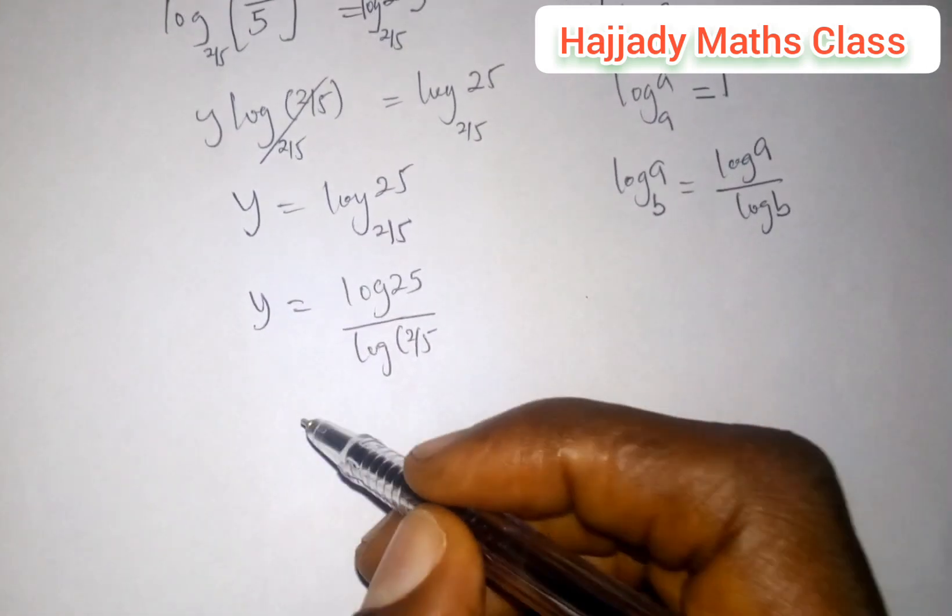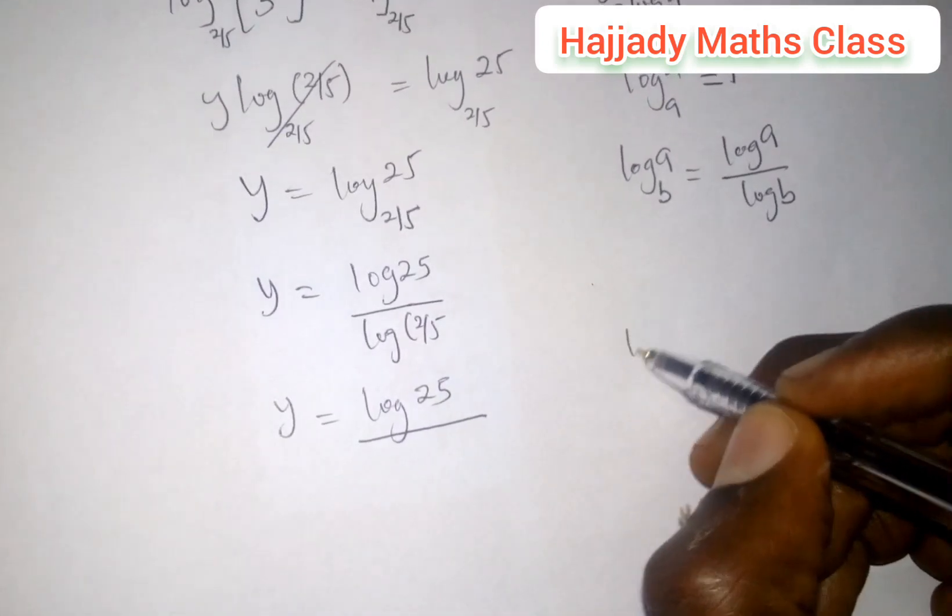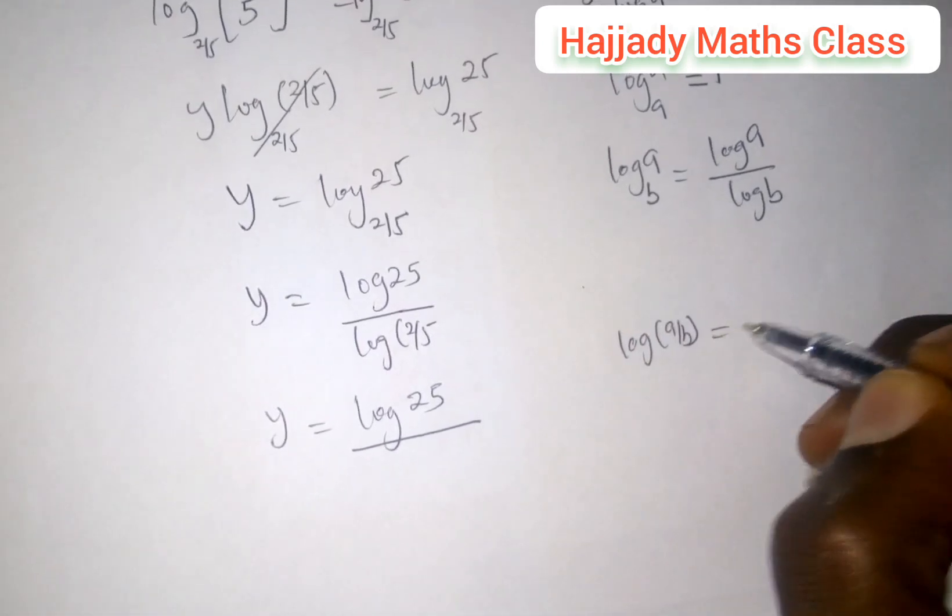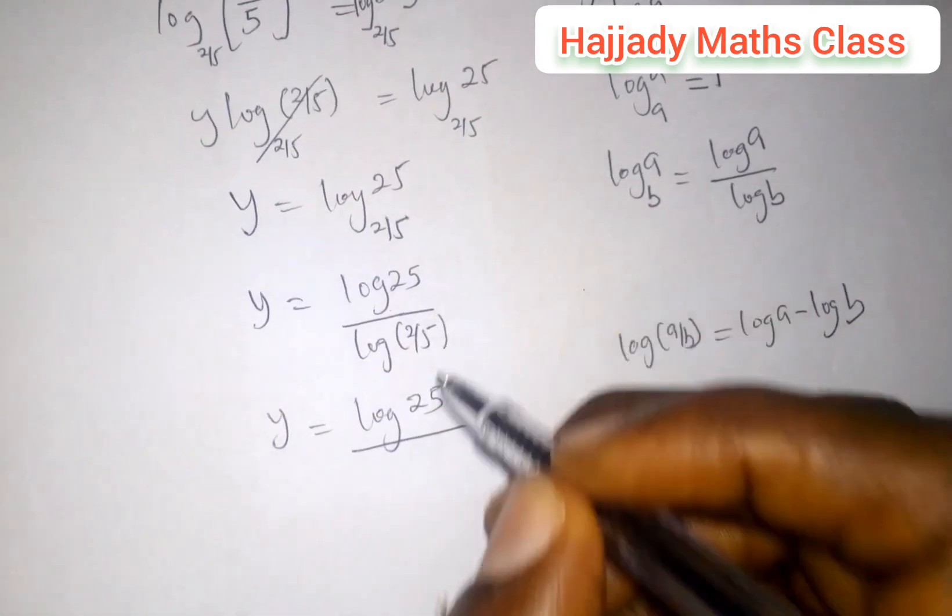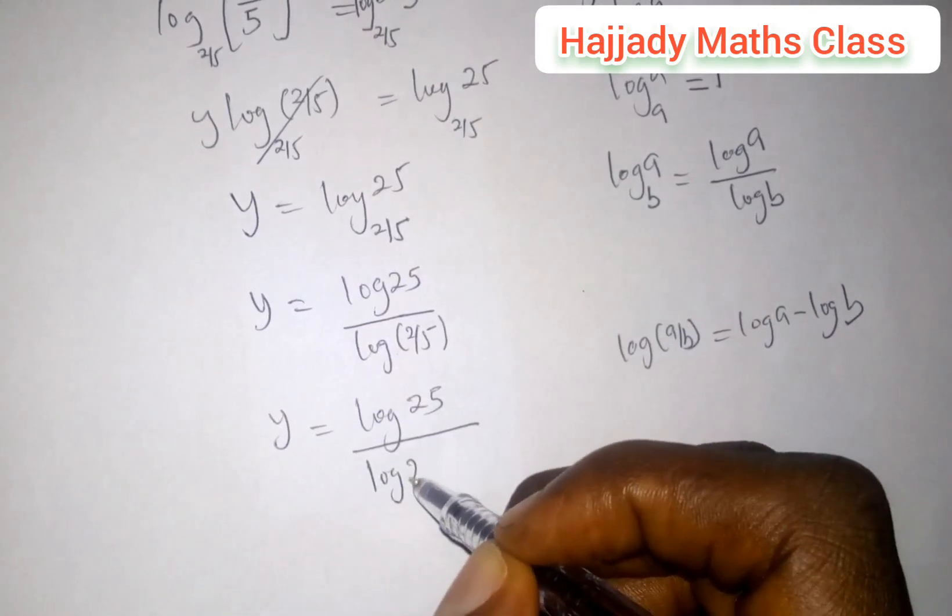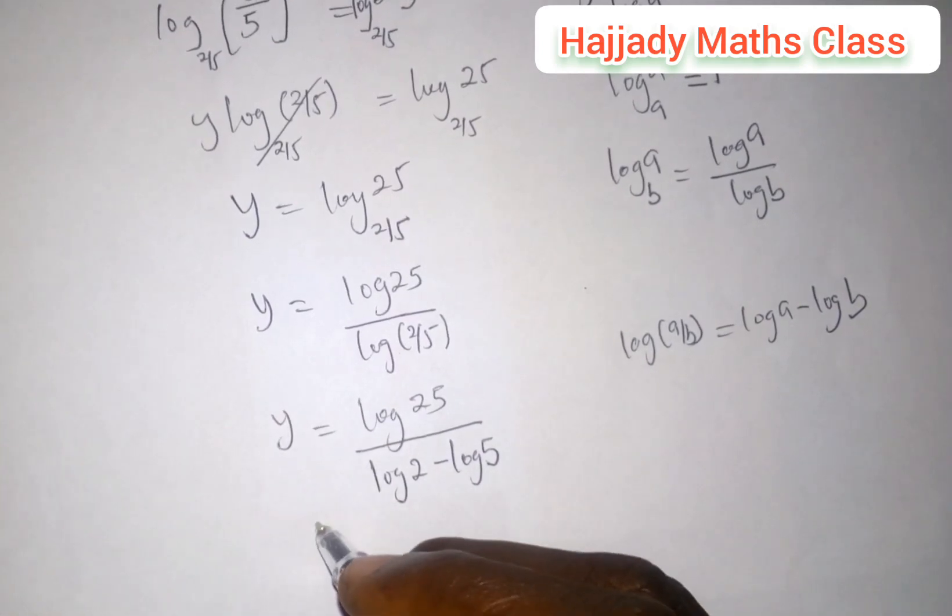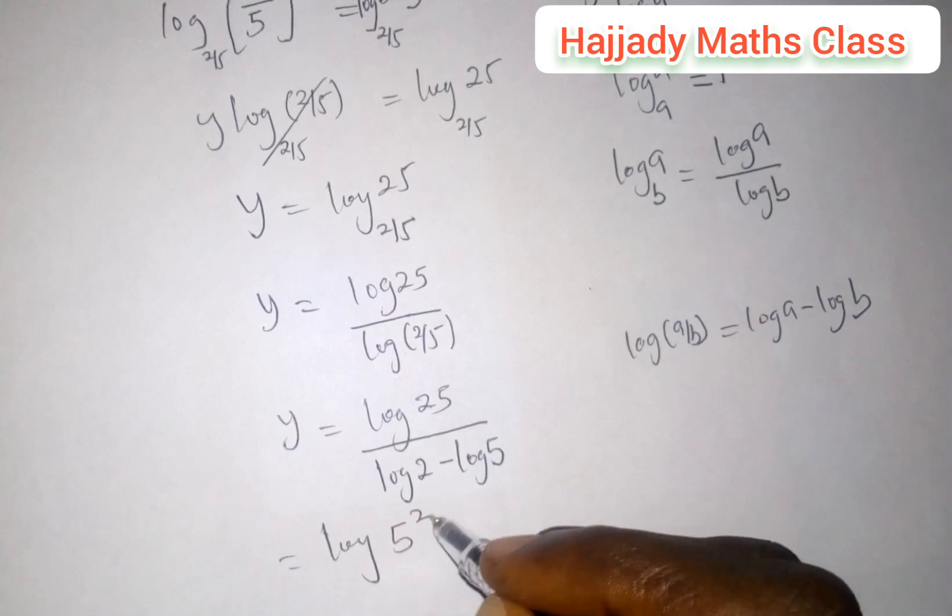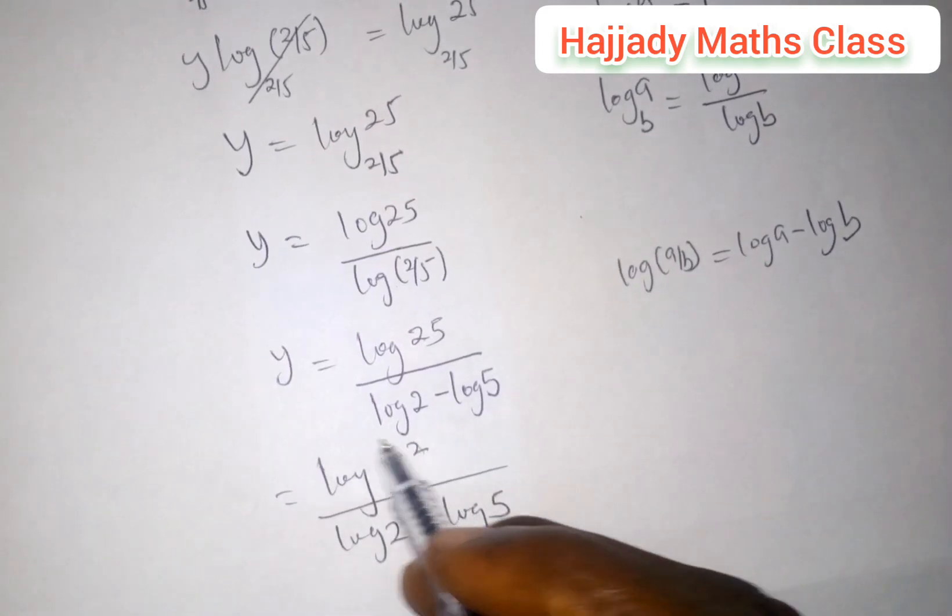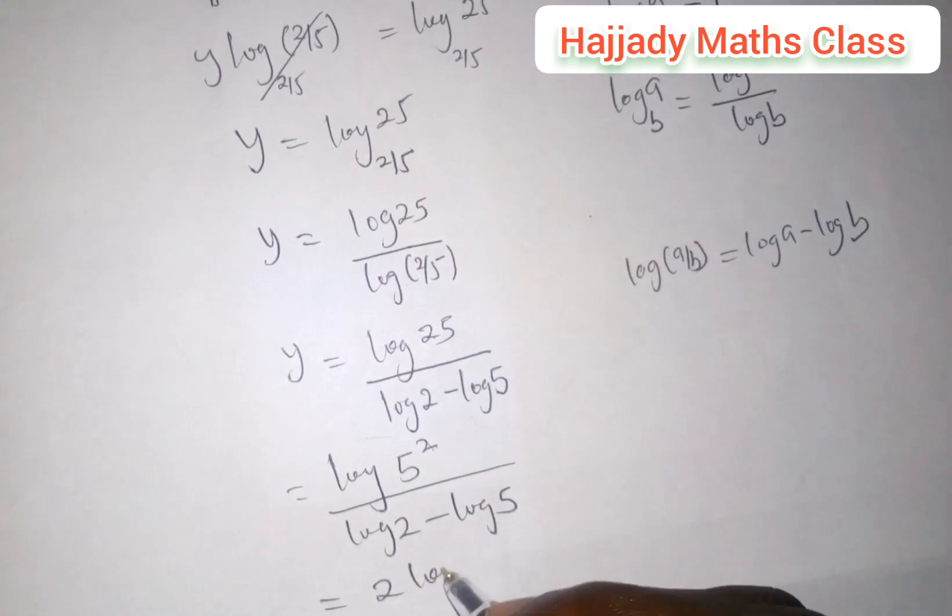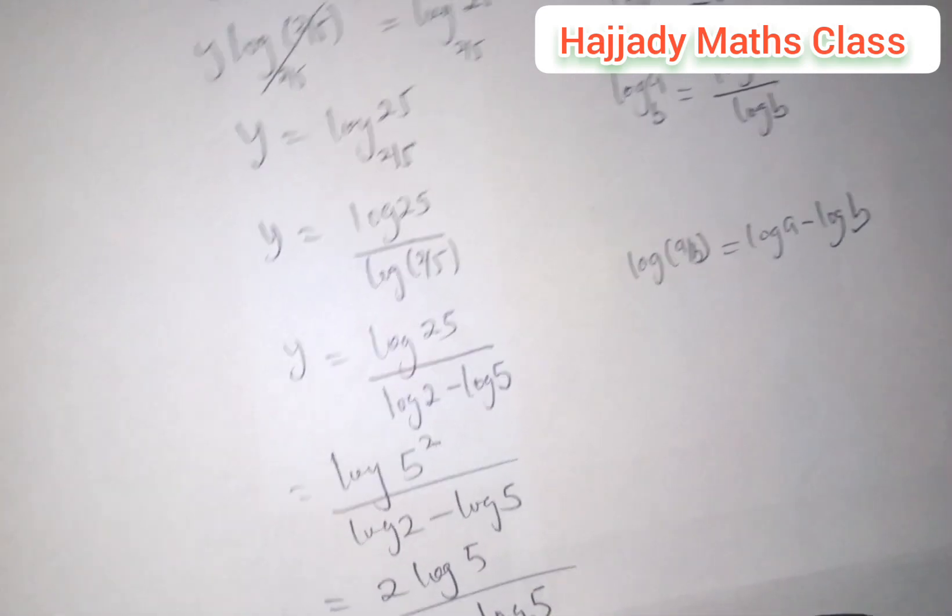We can rewrite this as y equals log 25 all over. Now, there is another rule of logarithms that says log a over b is equivalent to log a minus log b. This is the division rule. The same thing will be applied here. We have this to be equivalent to log 2 minus log 5. This is the same as saying log 5 raised to power 2 all over log 2 minus log 5. These 2 coming to the back here, we have it finally to be 2 log 5 all over log 2 minus log 5. This is our final answer.